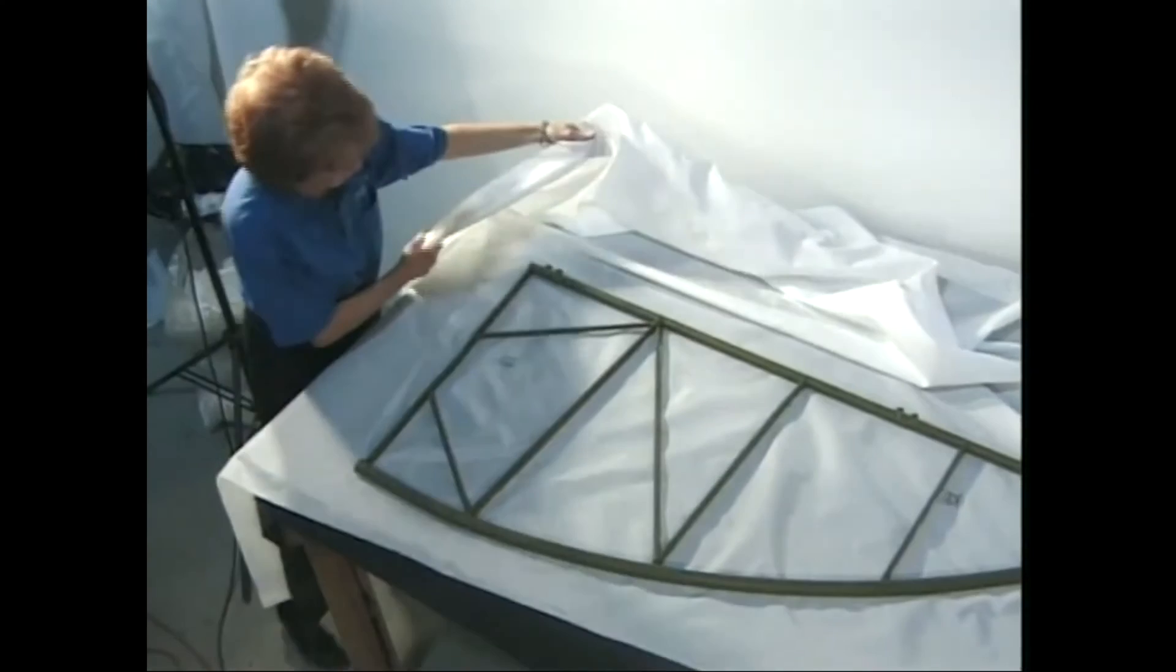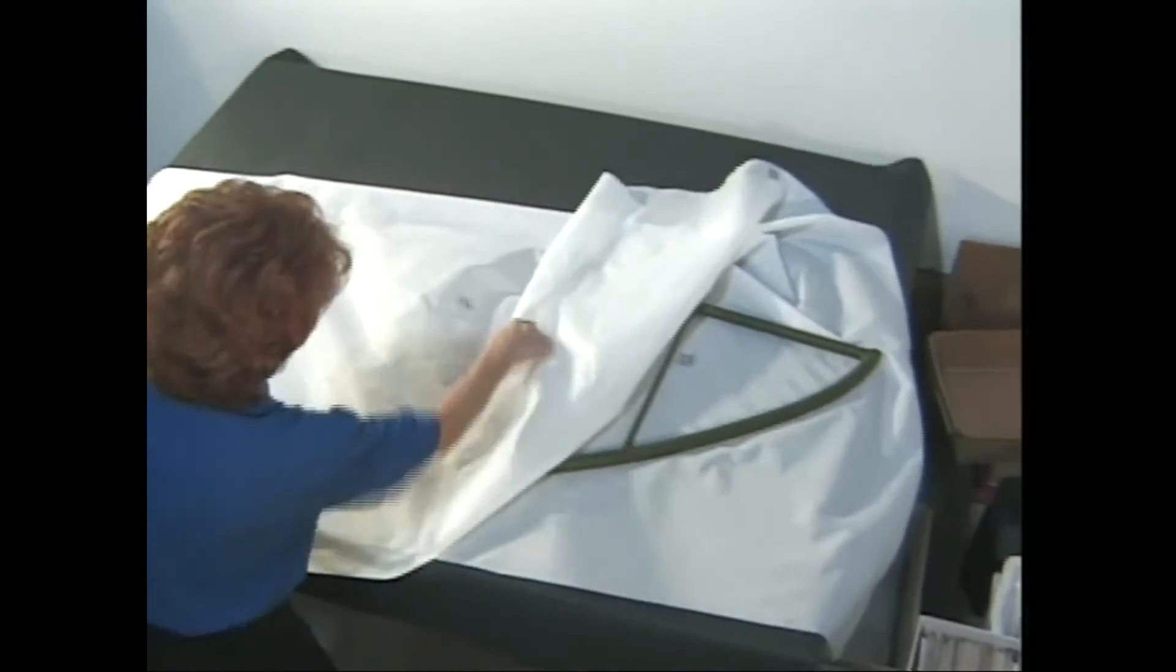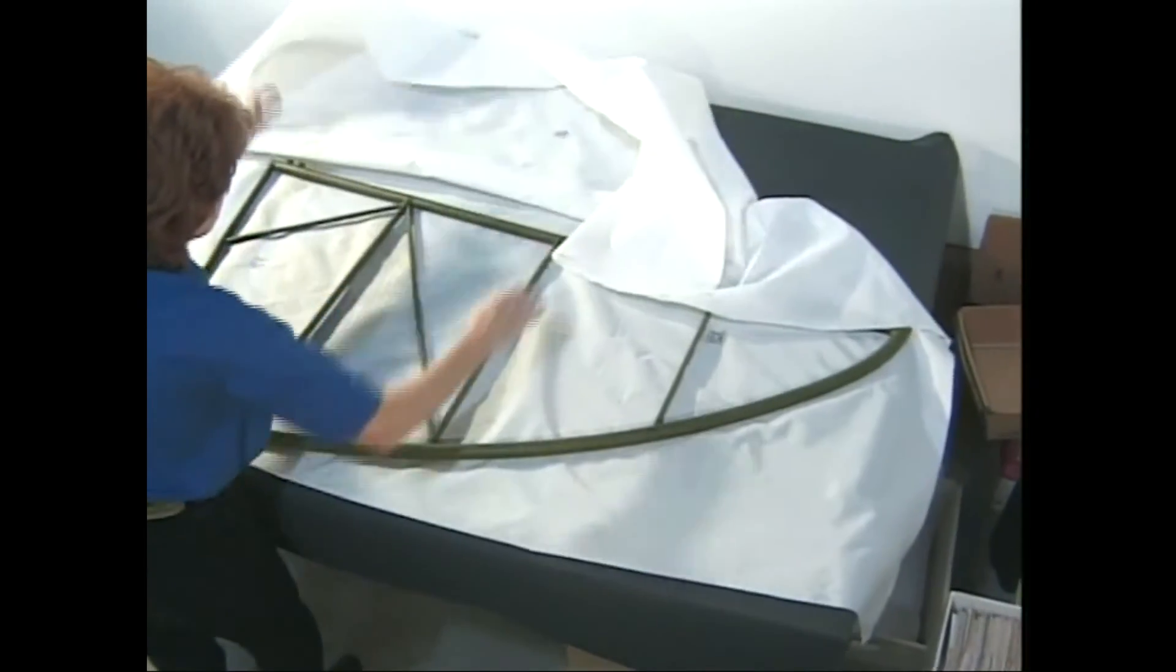Tail feathers are covered in much the same way as wings and ailerons. They will have a one inch fabric to fabric lapped seam. No need for any two inch seams like there are on the leading edge of a wing.